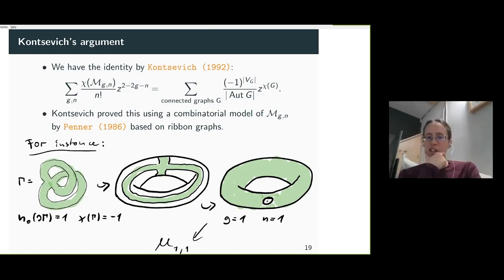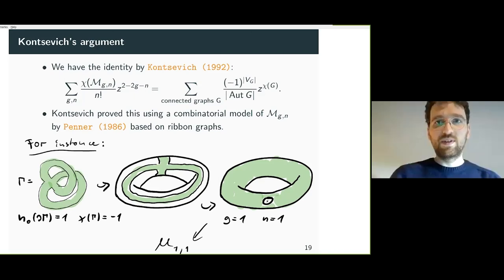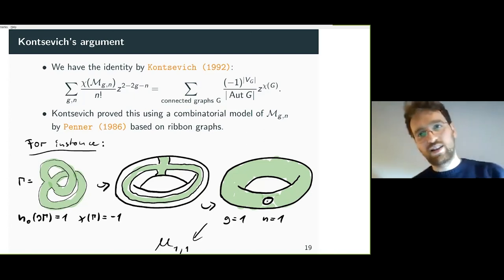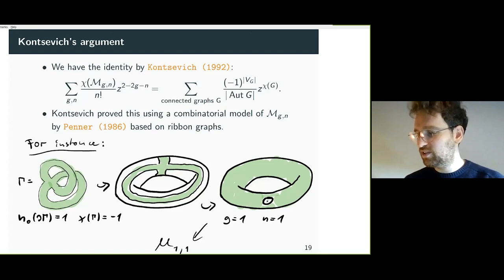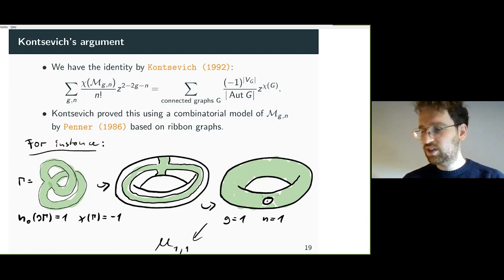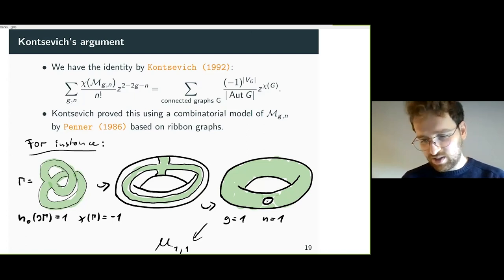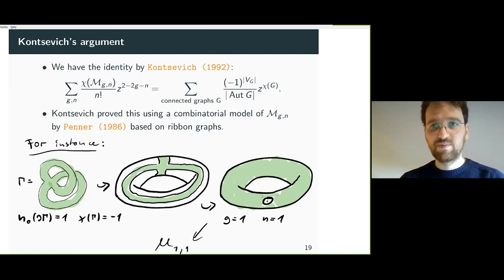Question: What does the beginning of the sequence for the integer Euler characteristic look like? Answer: It has positive and negative values, and also vanishes for some initial values. I can send you the paper with the initial 11 numbers by Morita, and also a list. Sorry I didn't include them in the presentation — and as I said, 70 of them were recently calculated just yesterday.